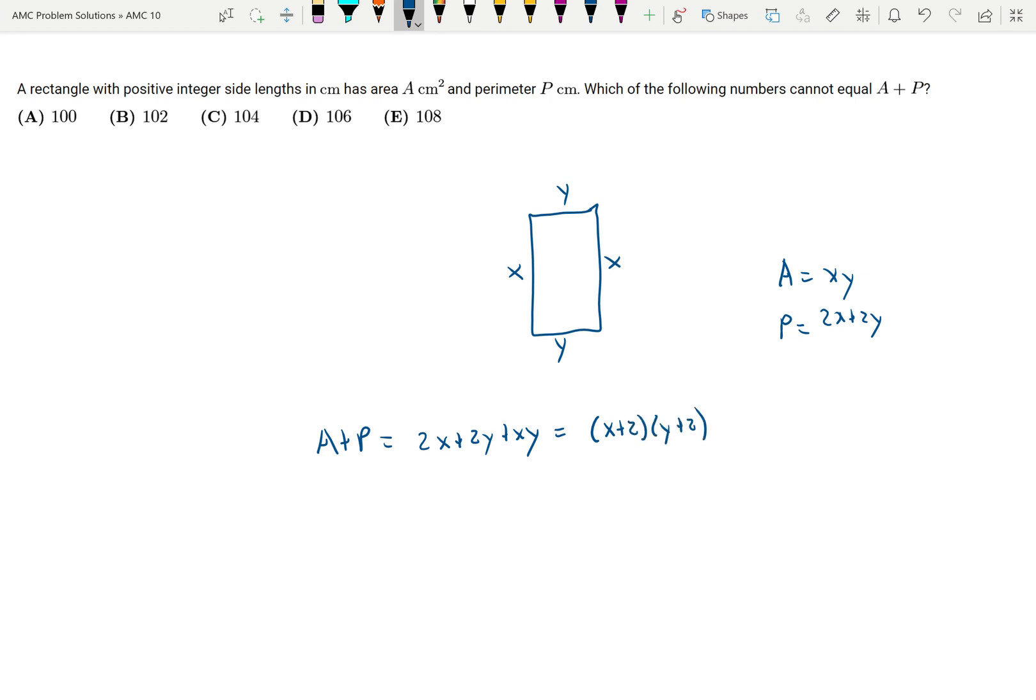And we need to subtract 4. Therefore it's true that A plus P plus 4 is equal to x plus 2 times y plus 2.